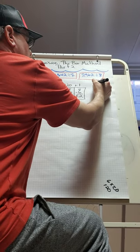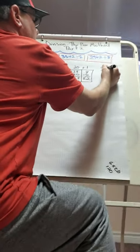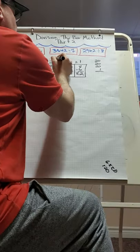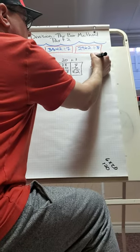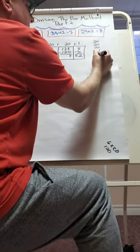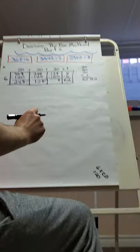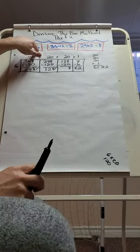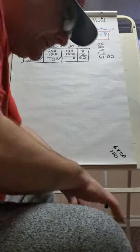I stack the numbers on the side to verify: 20, 20, 20, 1. Adding them: 0+0+0+1 is 1 in the ones, 2+2+2 is 6 in the tens — giving 61. My remainder is 2. The answer to 368 divided by 6 is 61 remainder 2.